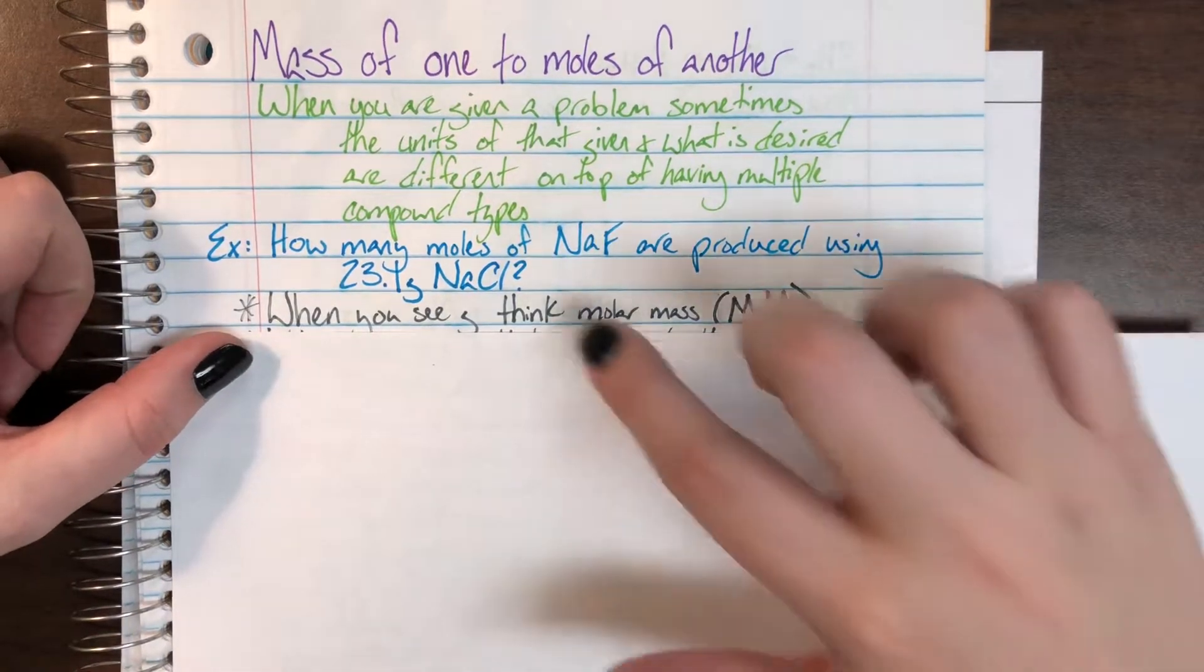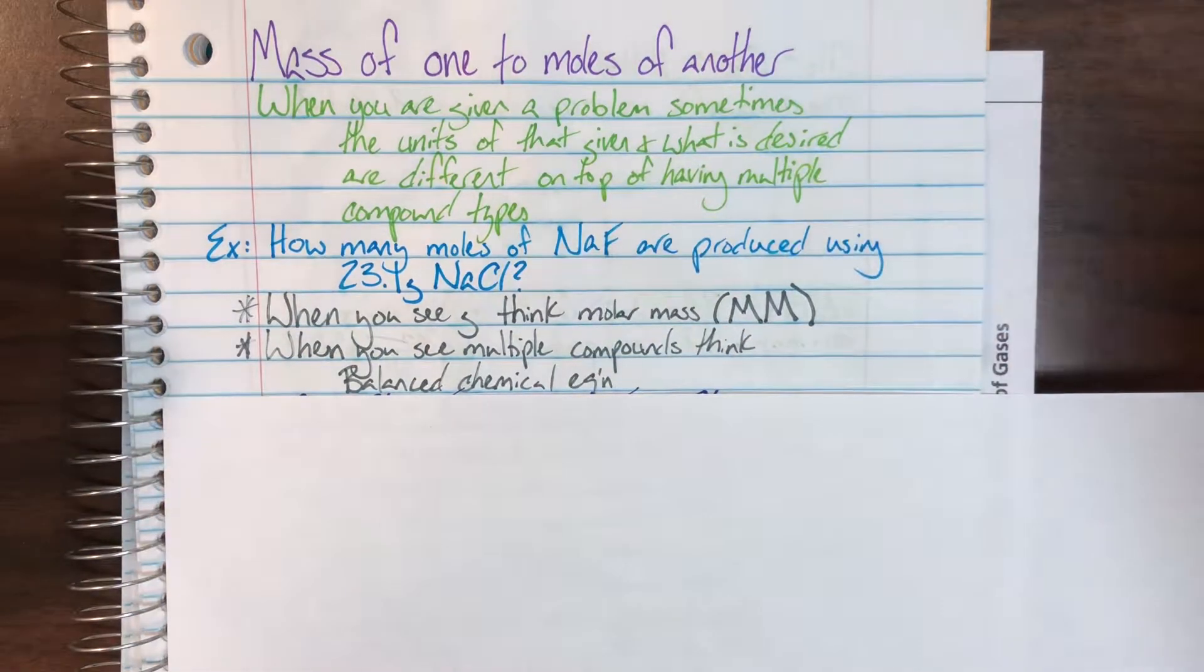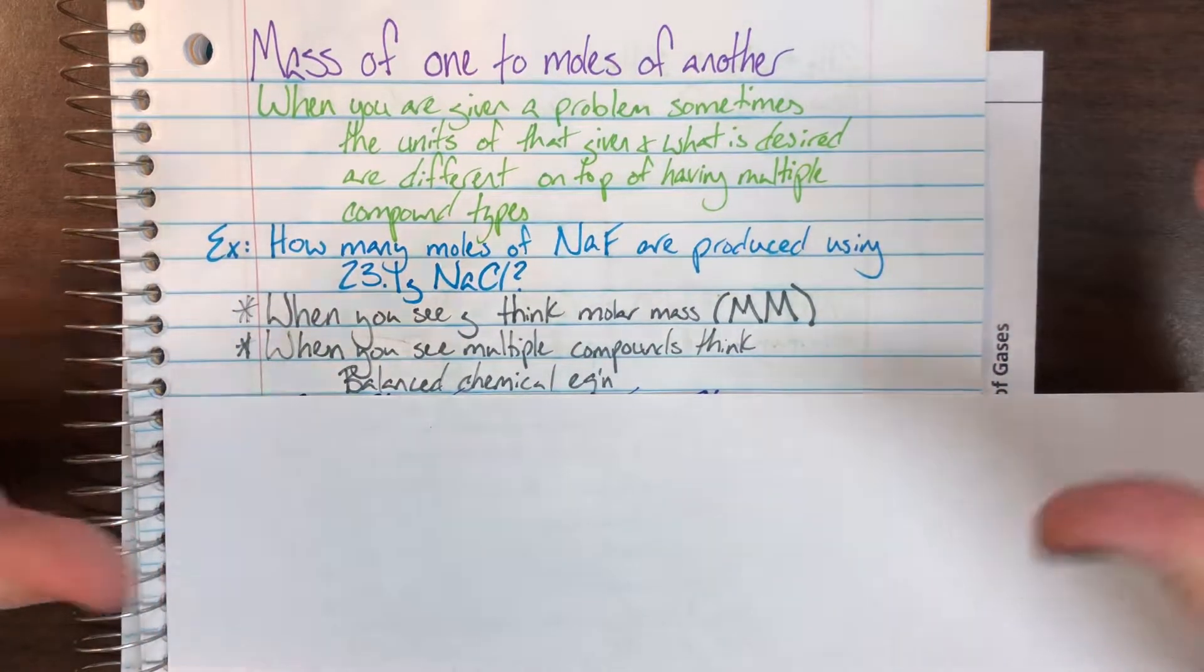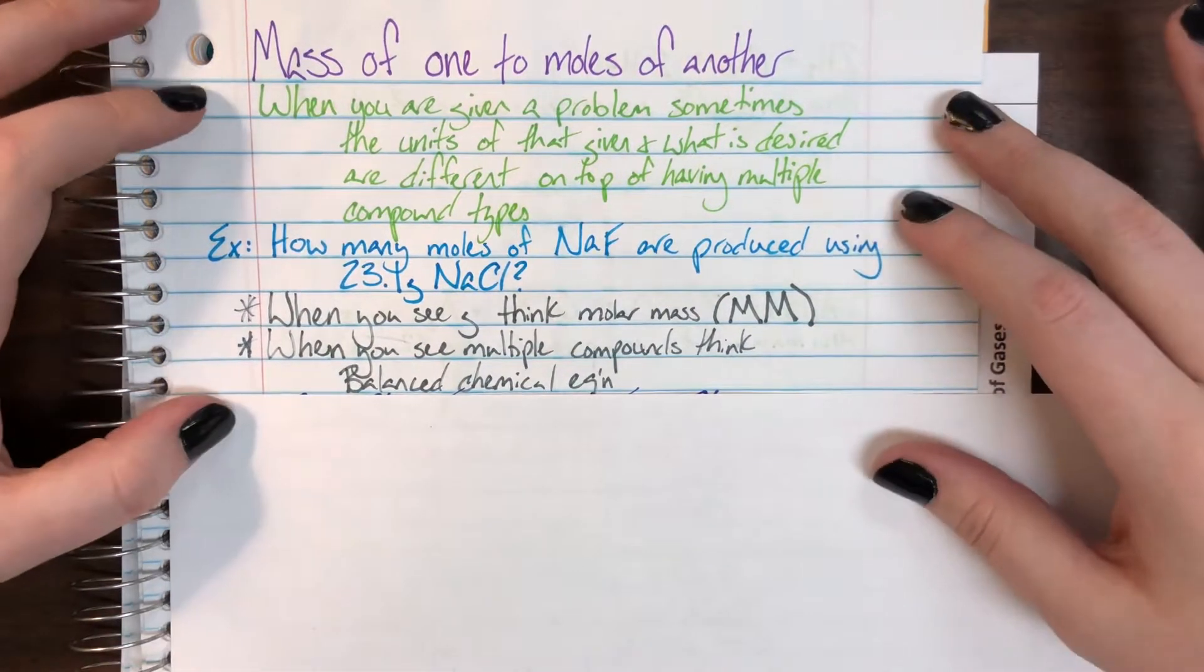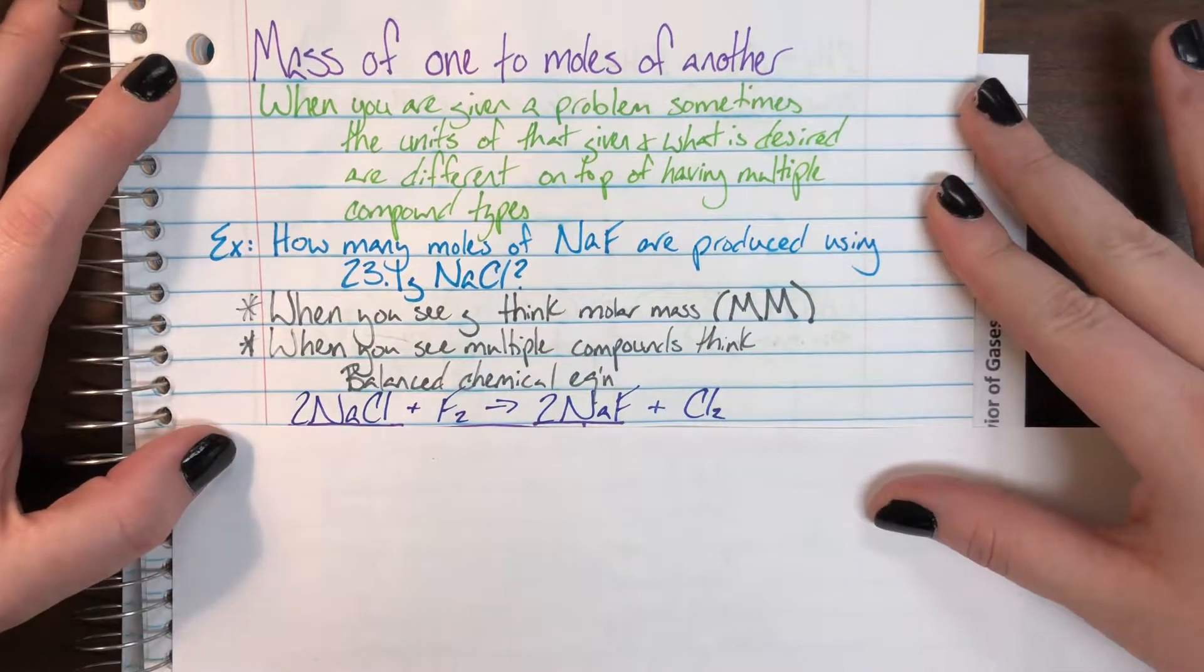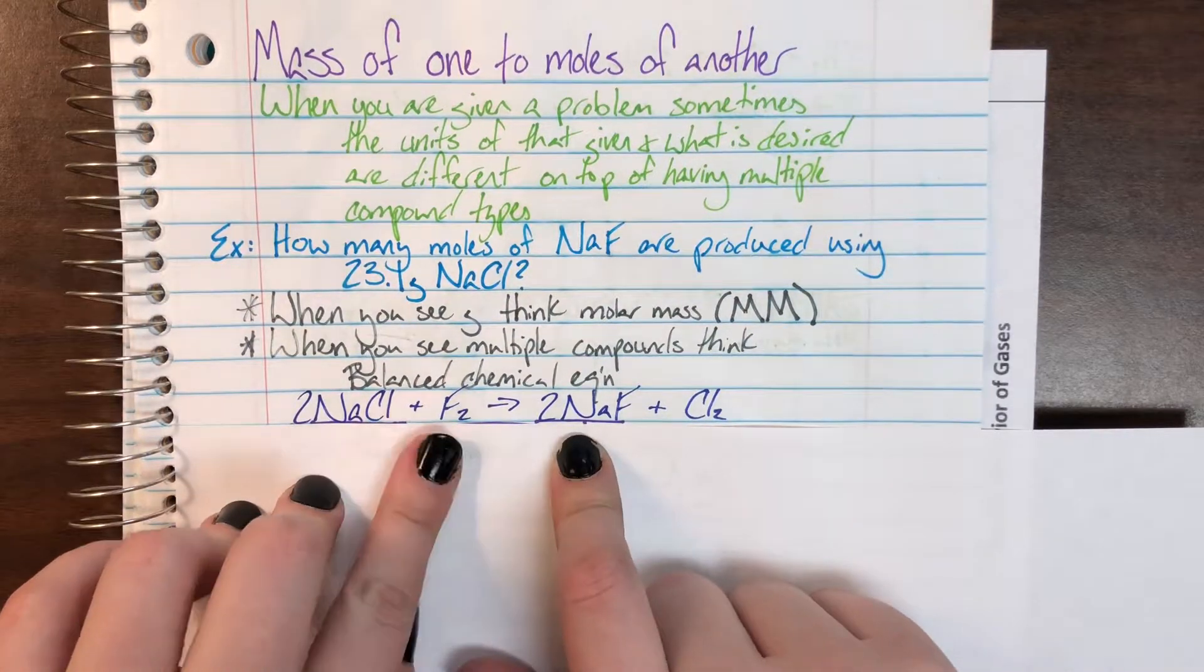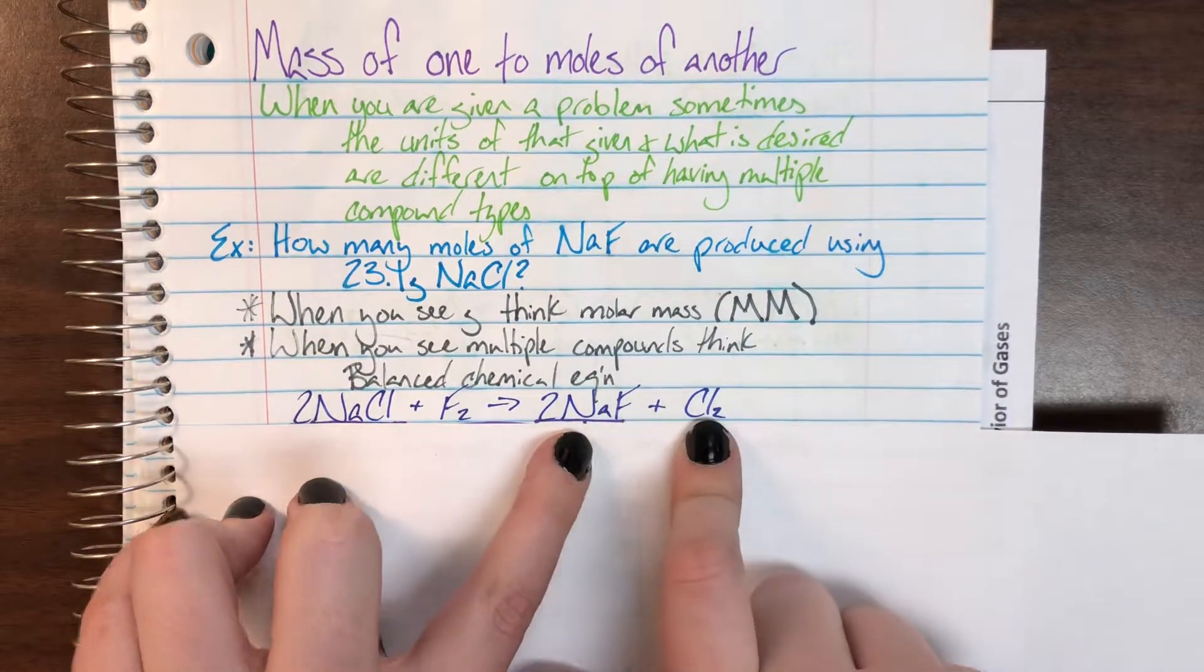Any time that you see two different compounds, you're going to need to think, I need a balanced chemical equation. I need to be able to find what my ratio is between these molecules so that I can make sure that my answer is correct. We're going to be given a balanced chemical equation right now. That's going to be, for every two sodium chlorides, I react with one fluorine, I produce two sodium fluorides and one chlorine.